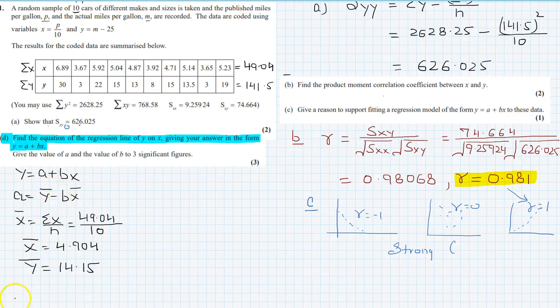Now we have to find the value of b. So the value of b will be S_xy over S_xx. We have to find the equation y on x. So that will be equal to S_xy is 74.664 divided by 9.25, so that will be equal to 8.06.